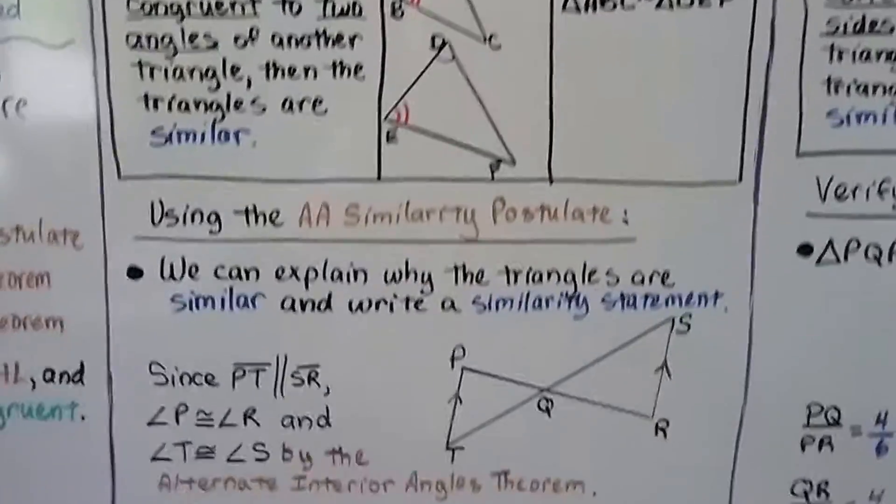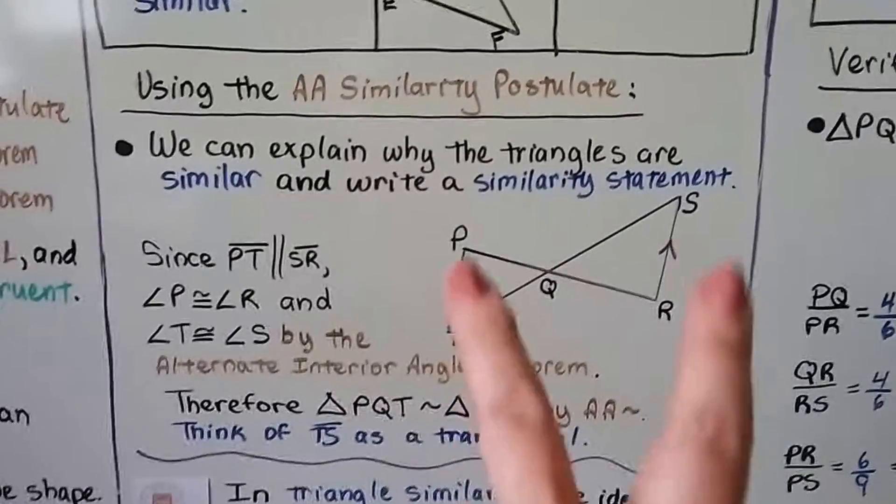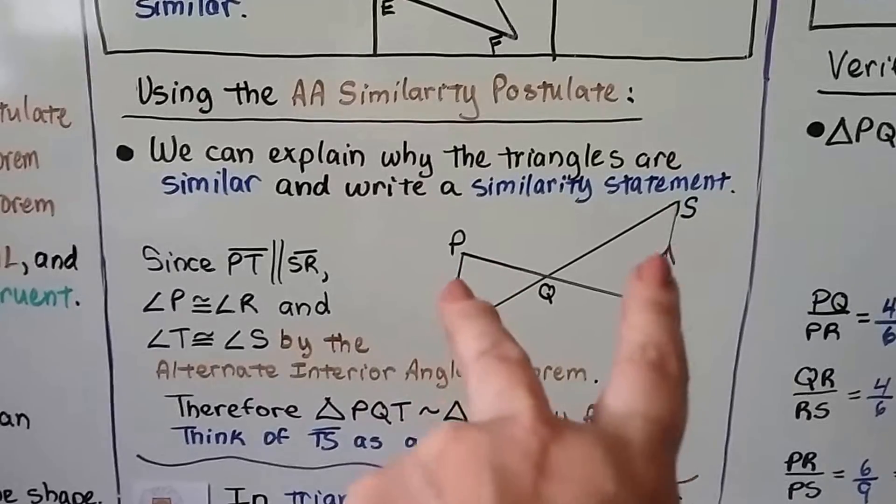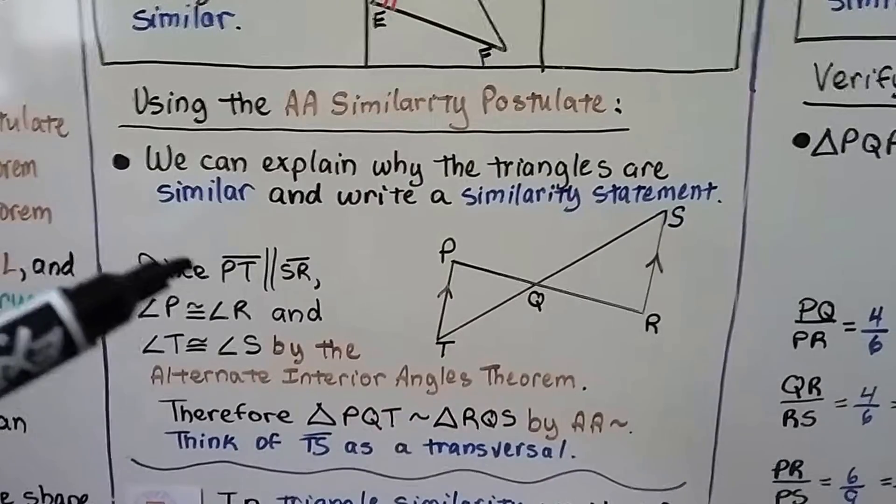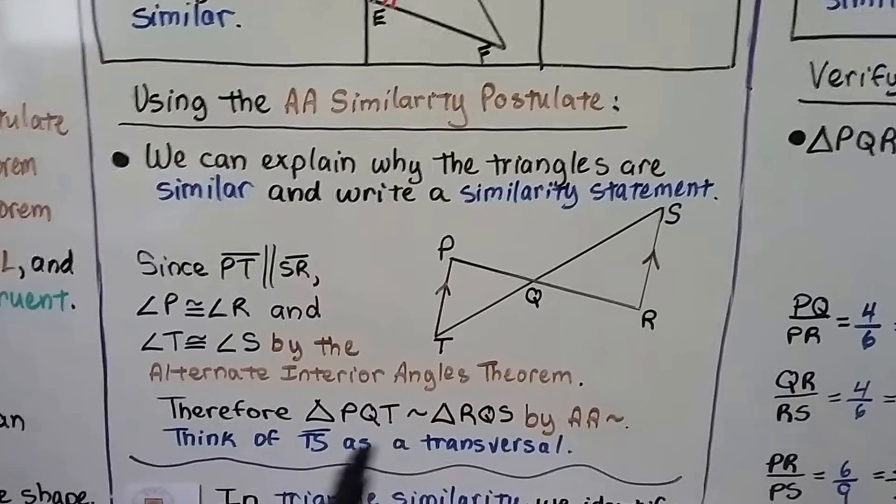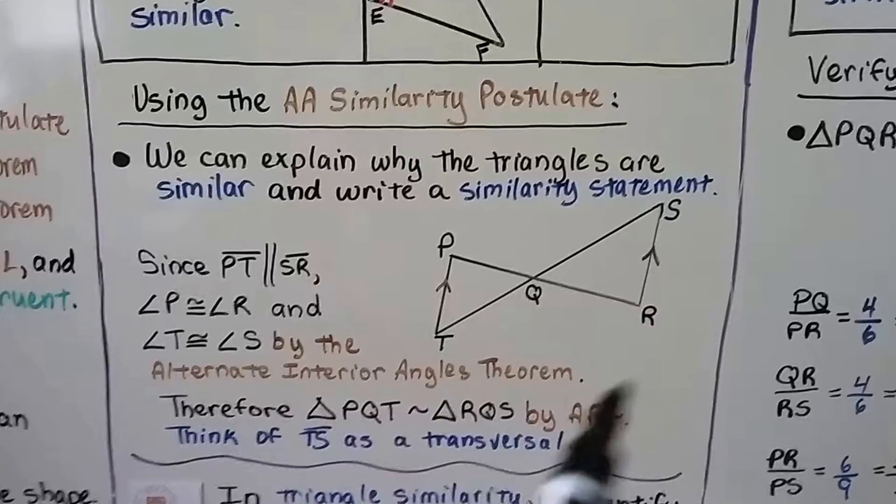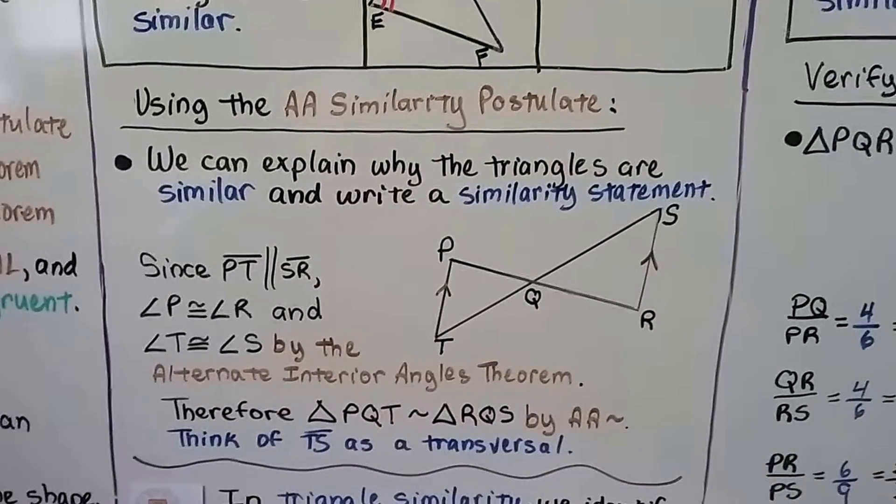Here's using the AA similarity postulate. Let's look at the diagram first. We can see that these two lines are parallel. Since segment PT is parallel to segment SR, then angle P is congruent to angle R, and angle T is congruent to angle S by alternate interior angles theorem.